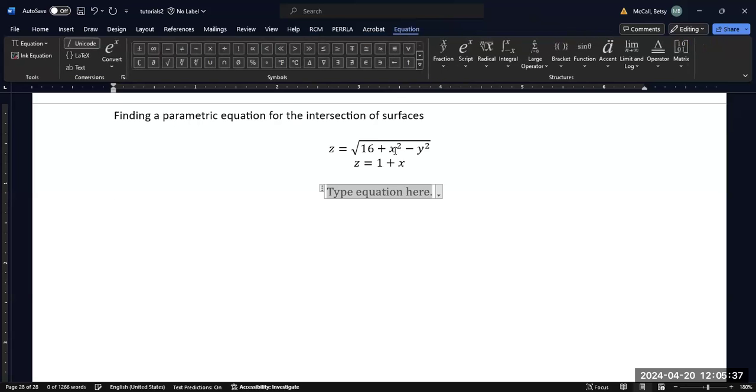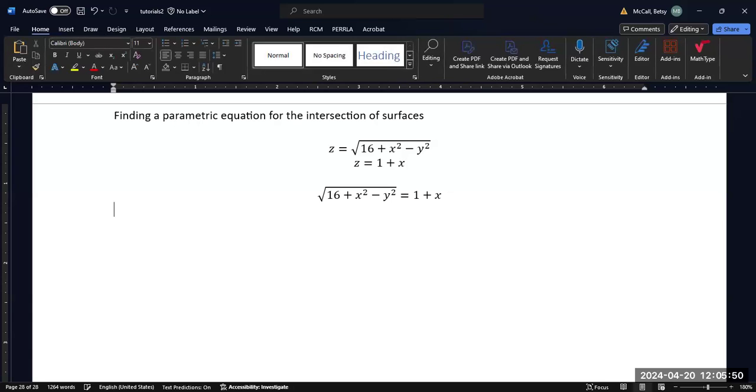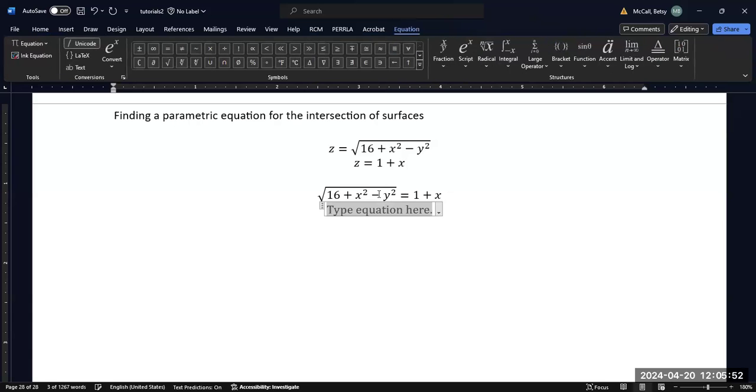We're going to set our two z equations equal to each other, so we're going to have our square root here equal to 1 plus x. In order to get rid of the square root, we're going to square both sides. And if I square 1 plus x, you can't distribute powers, you have to FOIL, you get 1 plus 2x plus x squared.